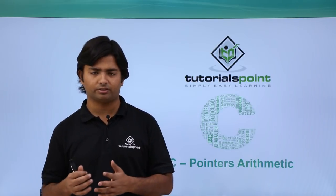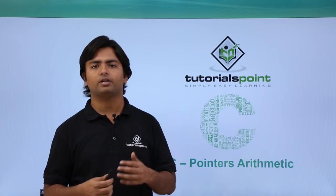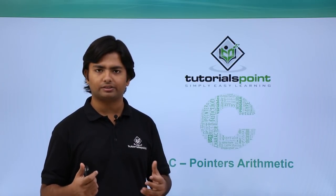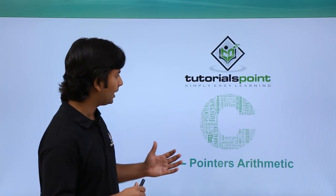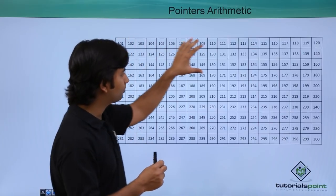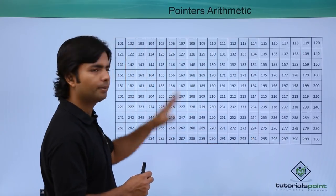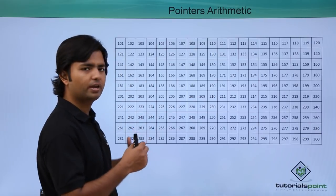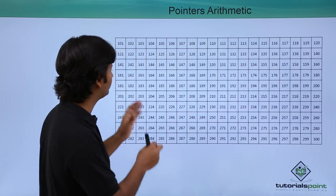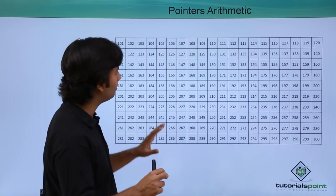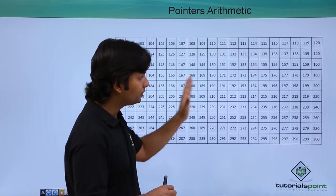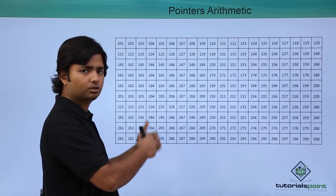Let's have a look. Since pointers store addresses and we can't exactly see them, I'll try to show you some memory blocks. Consider each block you are watching as a memory block of one byte. To make it easy, I have shown the address in decimal number format, not hexadecimal. So 101 is one byte, 102 is one byte — each has one byte and it's a continuous memory location.